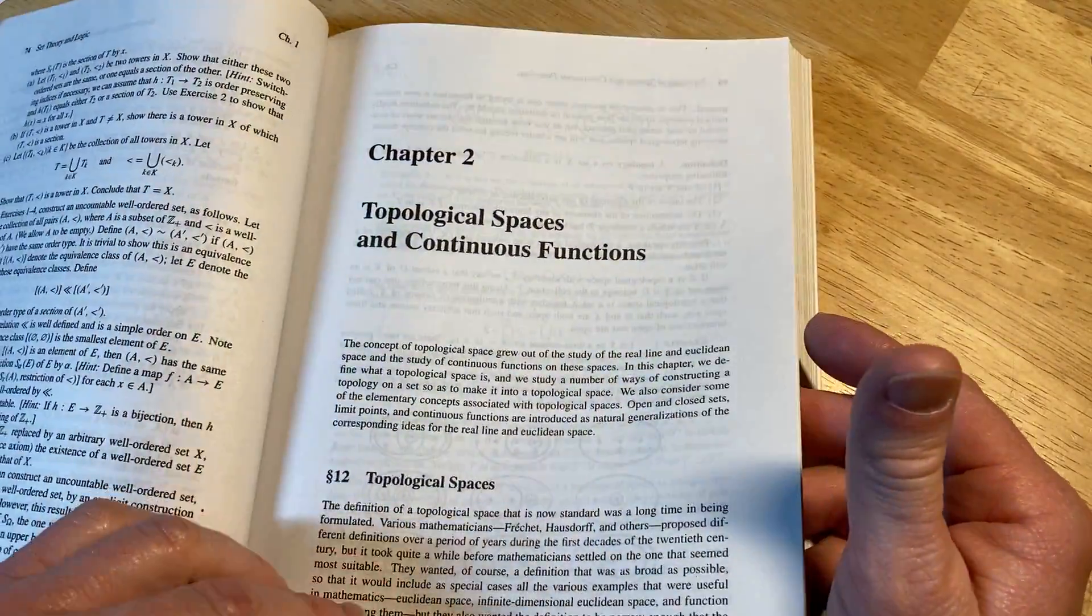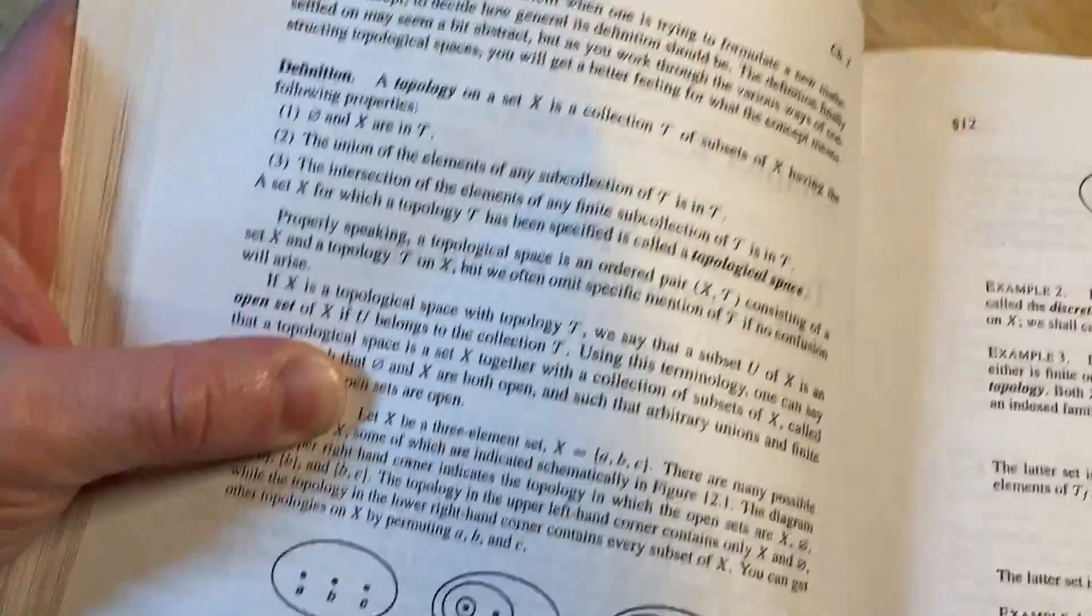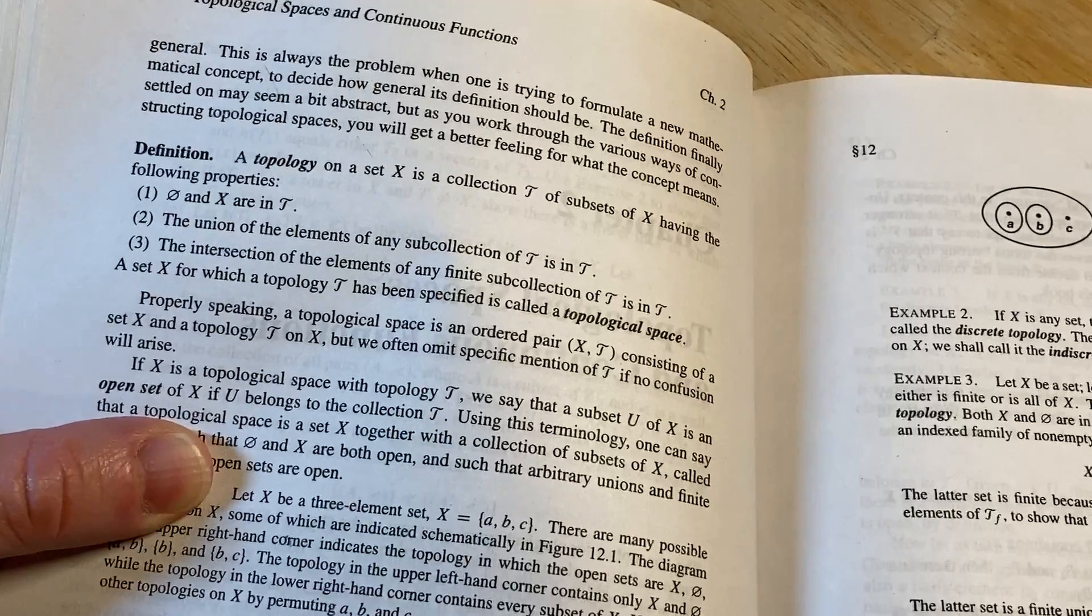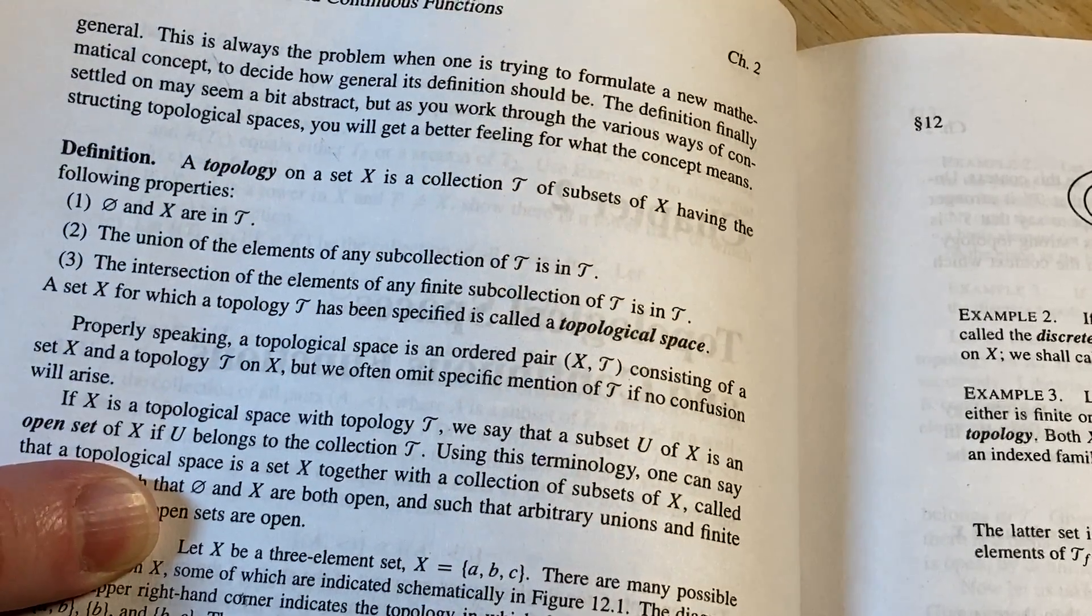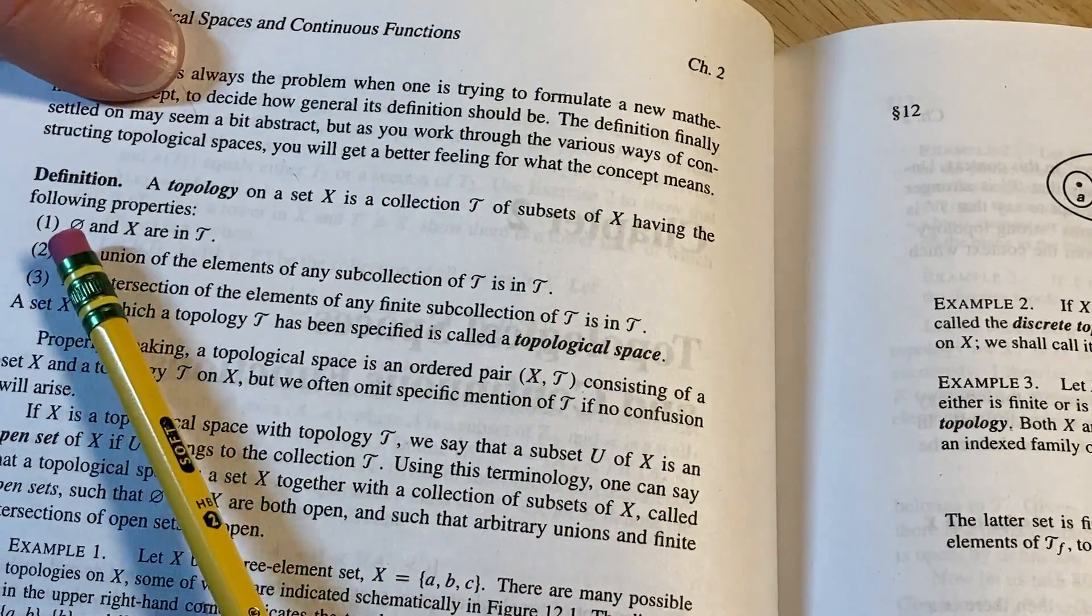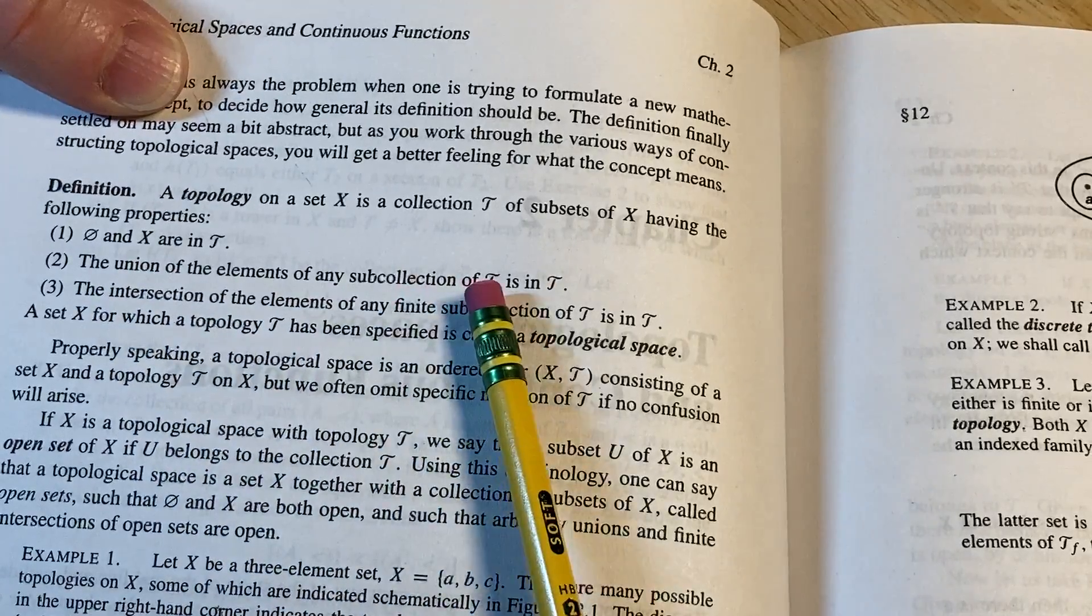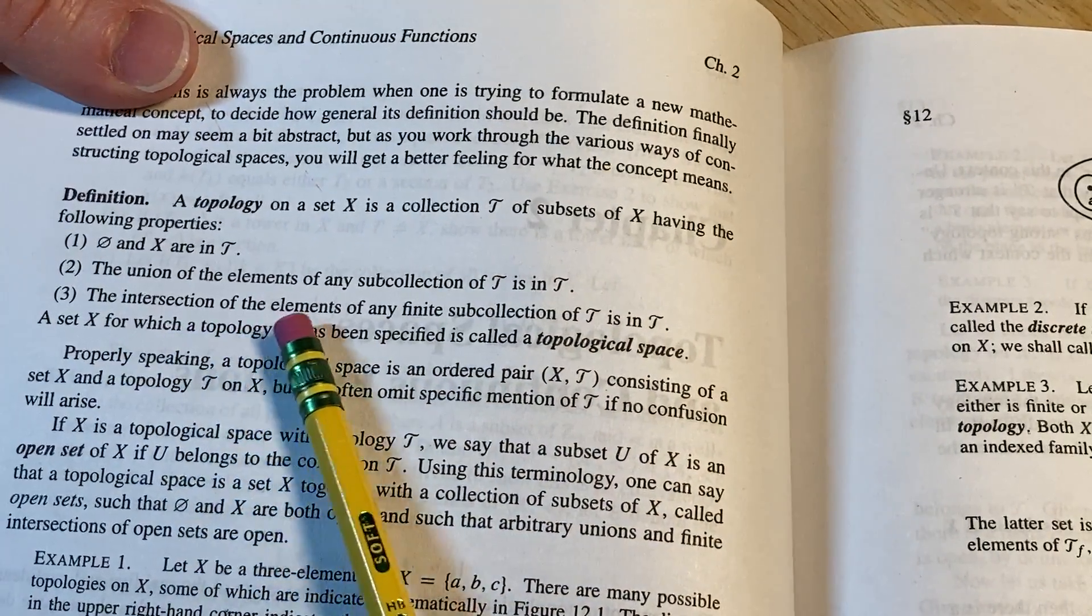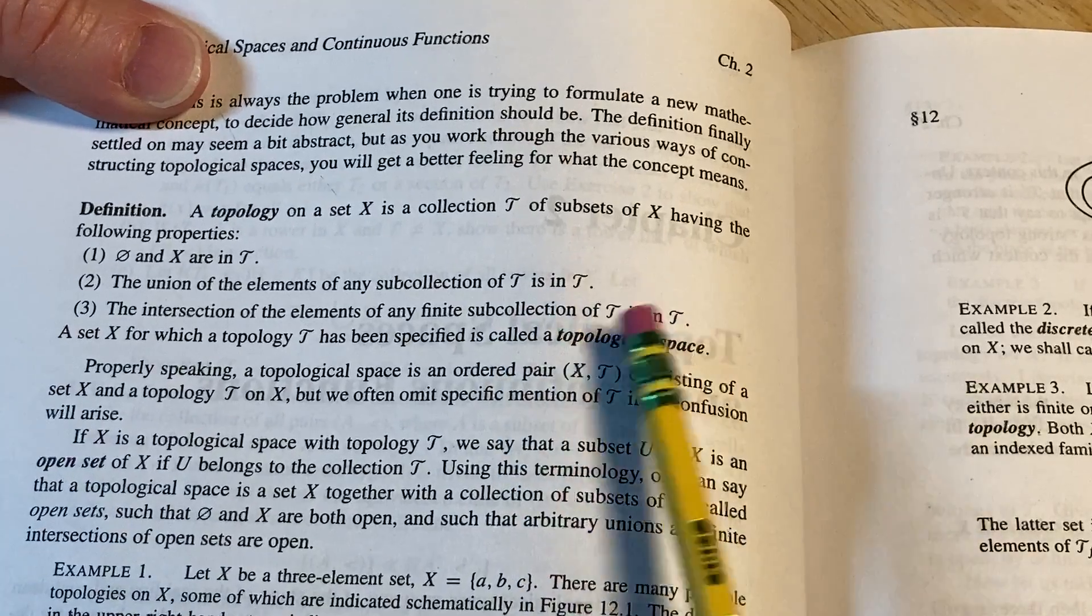Let's look at the definition of a topology. It's right here. Let's take a look at this. See what Munkres says. A topology on a set X is a collection tau, that's tau, of subsets of X having the following properties. The empty set and X are in tau. The union of elements of any subcollection of tau is in tau. And the intersection of the elements of any finite subcollection of tau is in tau. I like how he says it. It's just so clear.